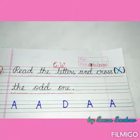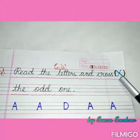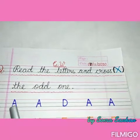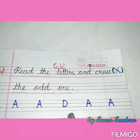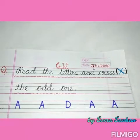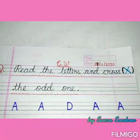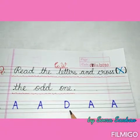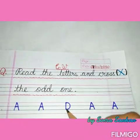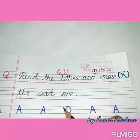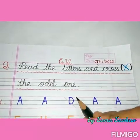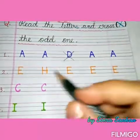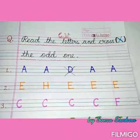So we have to find out the odd one, then put a cross on that odd letter. Again read: A, A, D, A, A. So tell me, which one is odd? Yes, D. D is different — all are A and one is D. So put a cross on D. From top to down, make a slanting line, then go back on top and draw another slanting line — make a cross this way. Now come to the next line: orange line. Same process, follow.